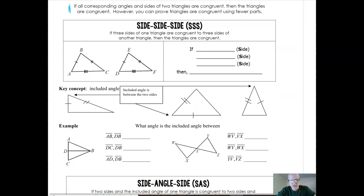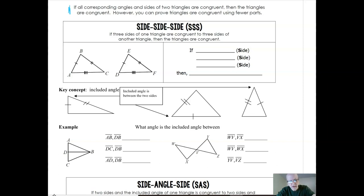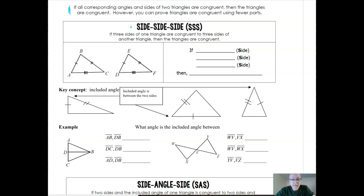Our first shortcut is called Side-Side-Side. What this shortcut says is that if three sides of one triangle are congruent to three sides of another triangle, then the angles will also be congruent and so the triangles will be congruent. In this first diagram with triangle ABC and triangle DEF, you can see that the three sides are marked congruent.